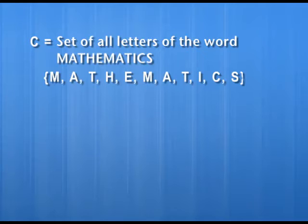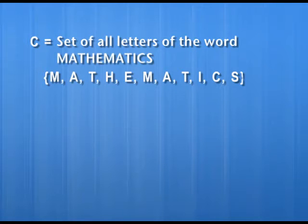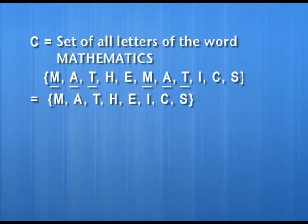Suppose we want to make the set of the letters used in the word 'mathematics': m, a, t, h, e, m, a, t, i, c, s. We observe that m has come 2 times, a also, and t also. But while listing the elements we will not repeat unnecessarily — we will write each element only once. So m will be written only once, a also, and t also. The total elements in this set will be 8 only.